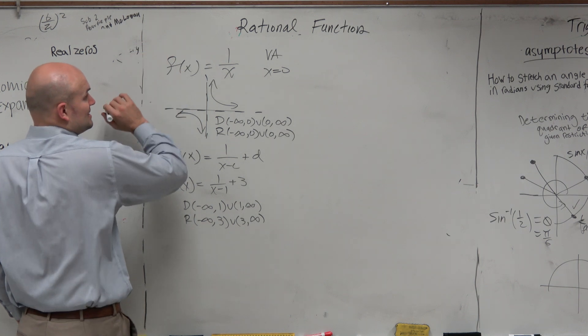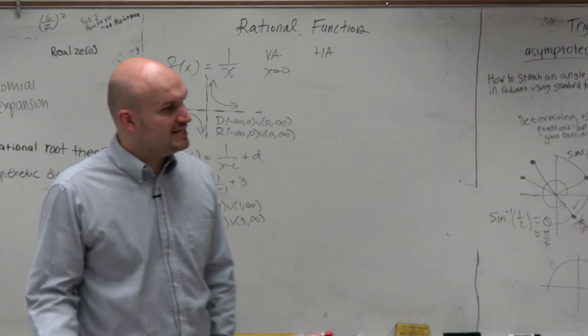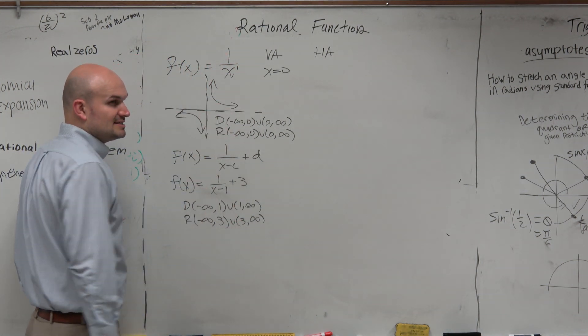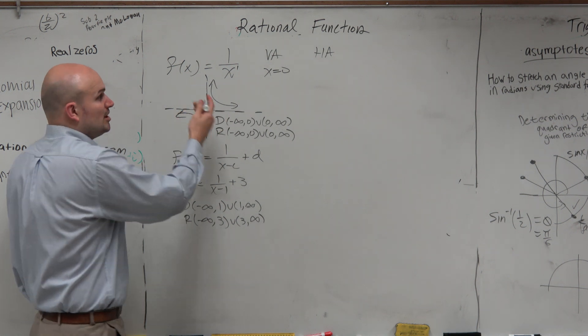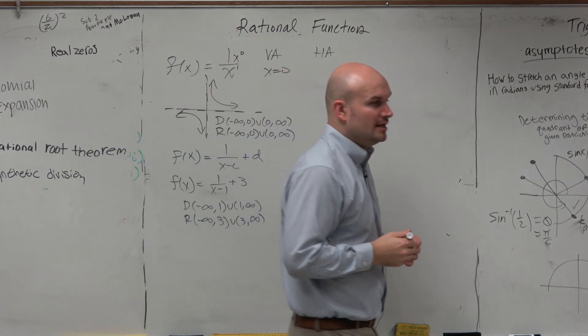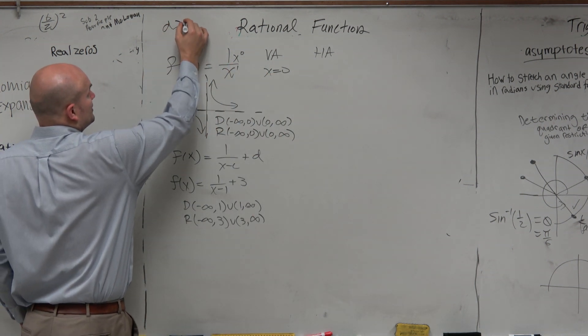So the horizontal asymptote test comes from the comparison of our degrees in the denominator as well as the numerator. And if you guys can see, that is x to the first. We don't really have a variable up here, though, right? So we could use x to the 0 power. And what we notice is the degree in my denominator is larger than the degree in the numerator.